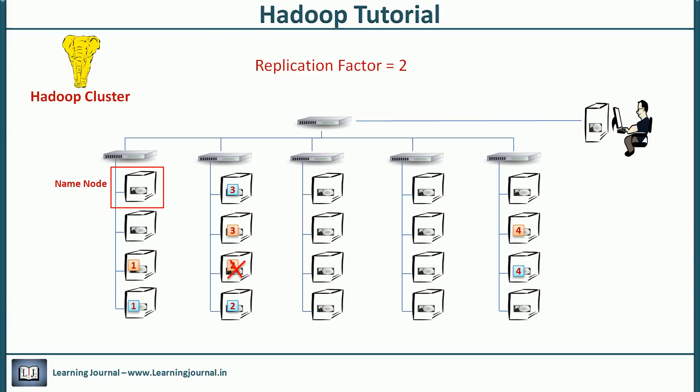We typically set the replication factor to three. Making three copies is reasonably good. However, if your file is supercritical, you can increase the replication factor to some higher value.